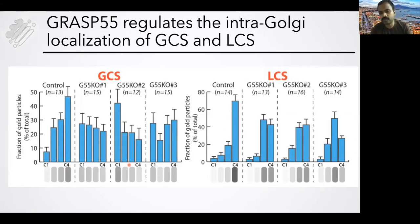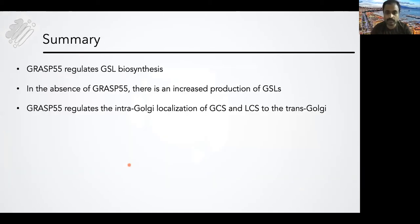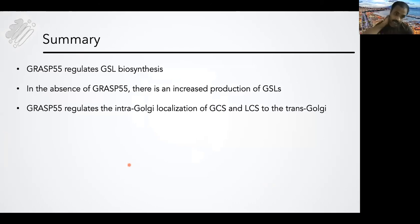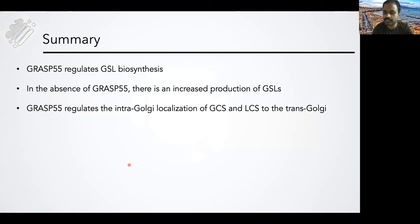In the absence of GRASP55, the localization of the enzyme is changed. To summarize: GRASP55 regulates GSL biosynthesis. In the absence of GRASP55, there is increased production of glycosphingolipids, and GRASP55 regulates the intra-Golgi localization of GCS and LCS specifically — moving them from the trans to the cis side of the Golgi.